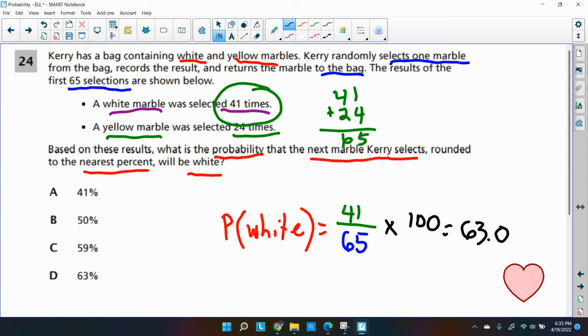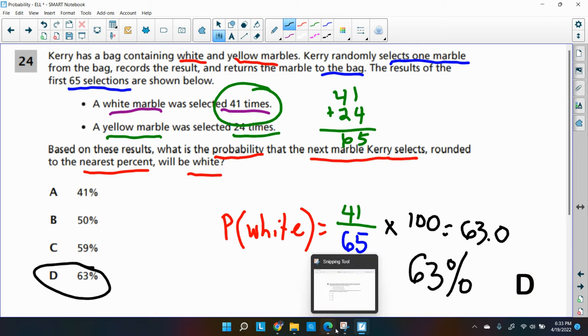And I'm going to round that off to 63% because I want it to the nearest whole. So I get 63%, which is my choice letter D. So I would choose D and let's check it. And that is the choice. So that was a good state test question dealing with experimental probability.